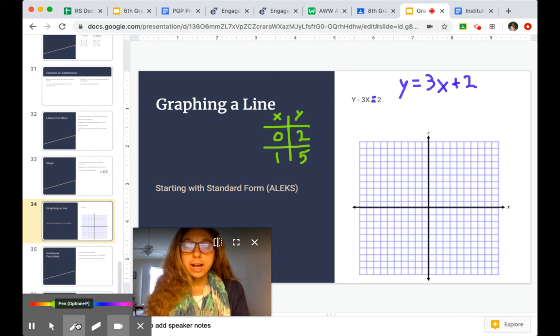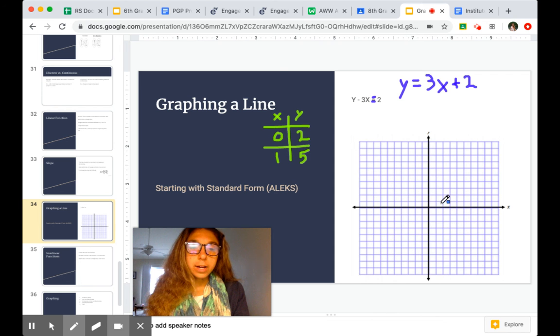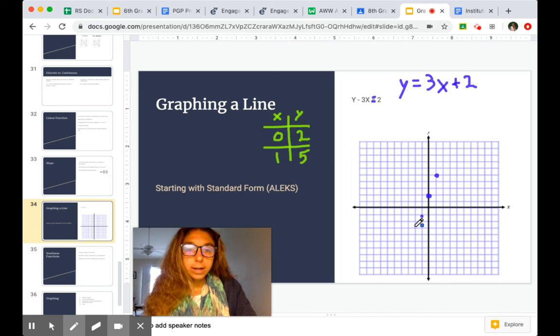So we're going to have points at the ordered pairs 0, 2, and 1, 5. Put those on our graph. And then we can go ahead and draw our line.